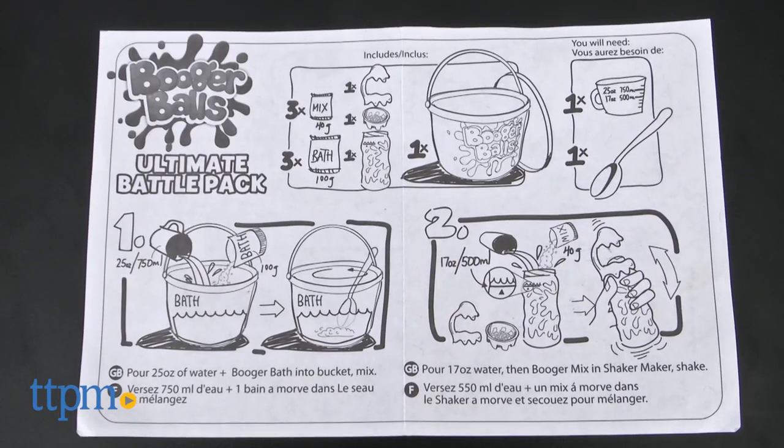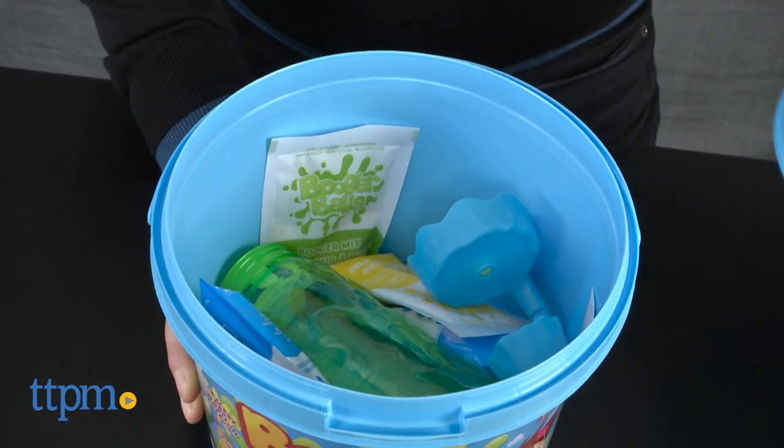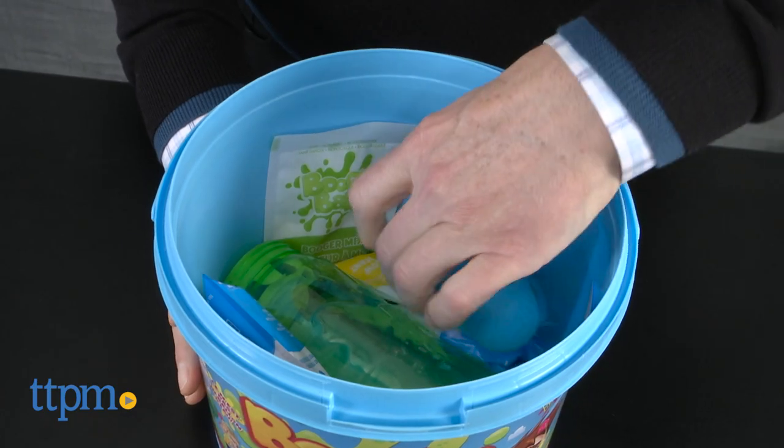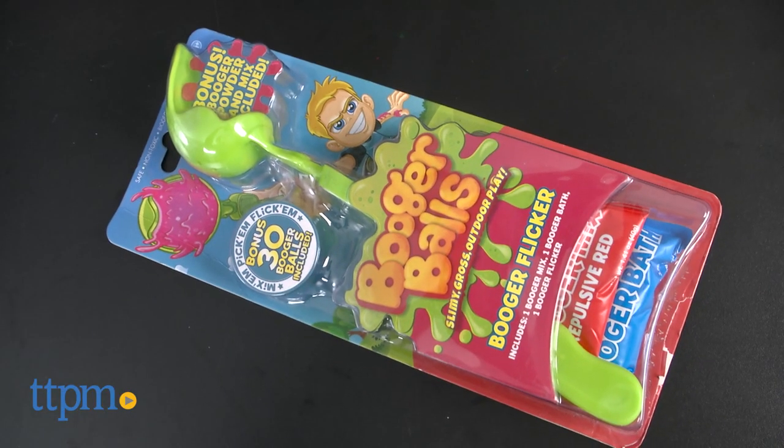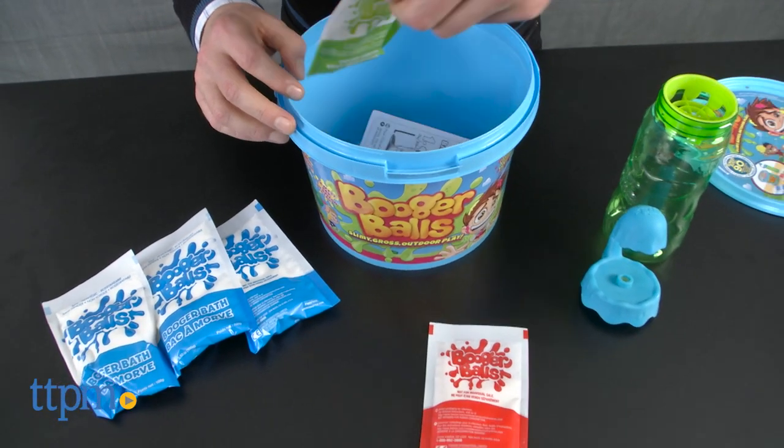First thing we do is make the boogers. There are a bunch of different sets you can buy, but what I'm going to demonstrate with is the Ultimate Battle Pack. Starter packs and accessories are sold separately too, but many of those accessories come in the Ultimate Battle Pack, so really that's where you want to go.